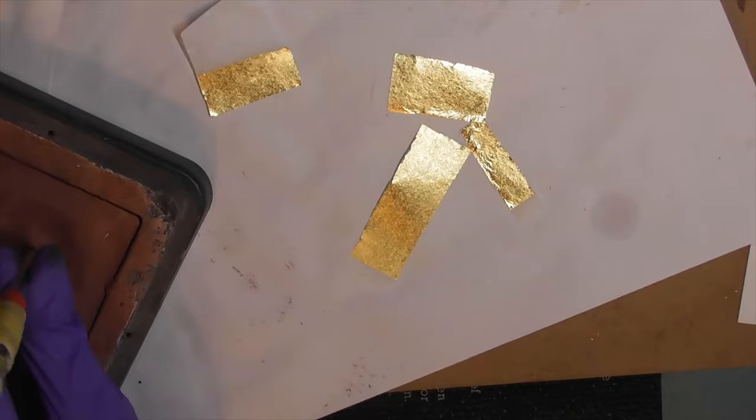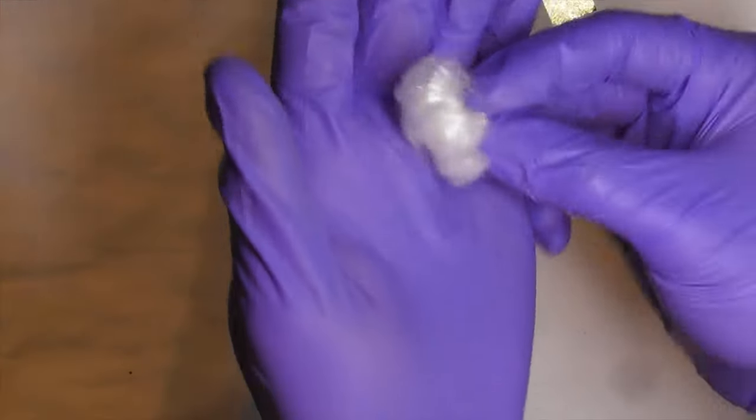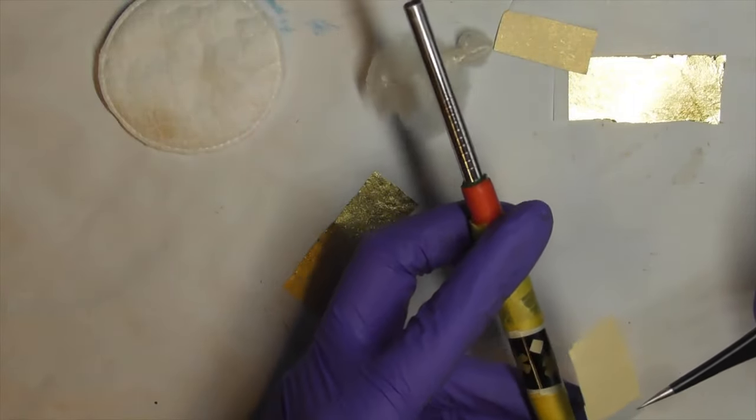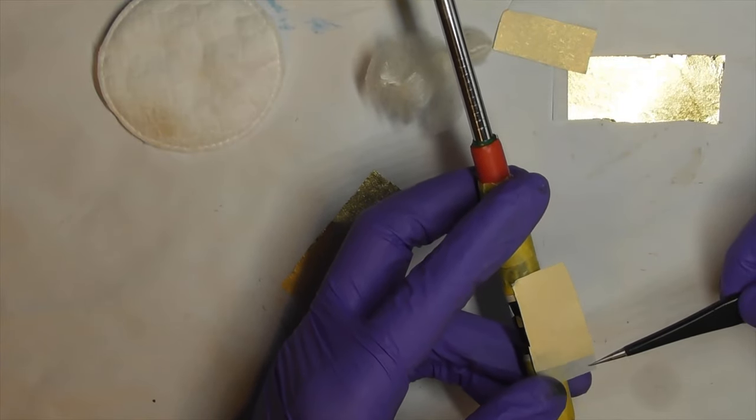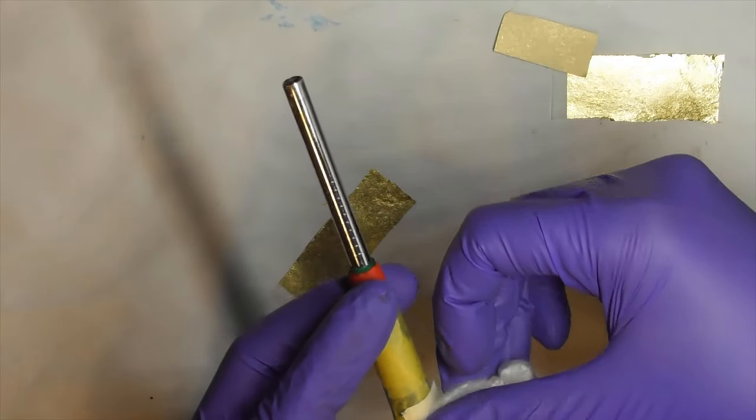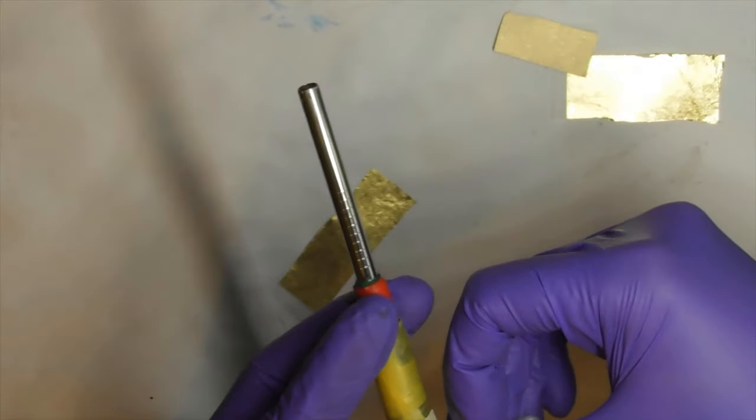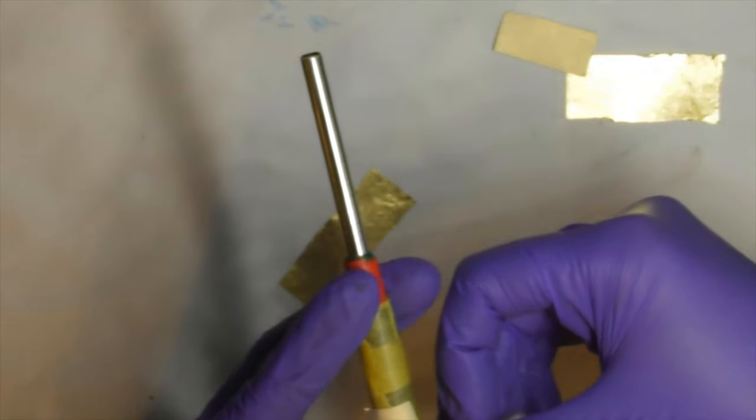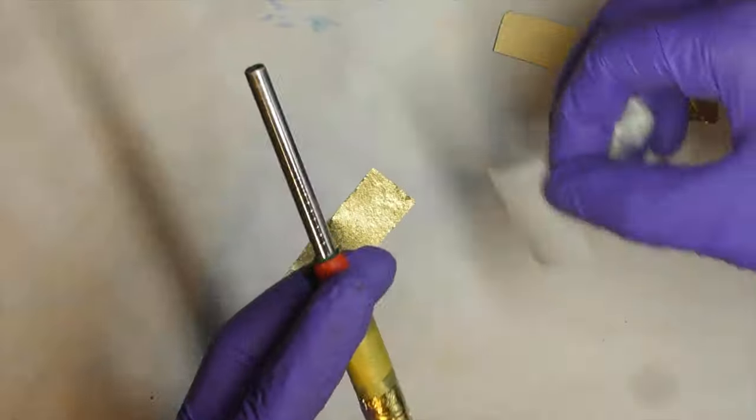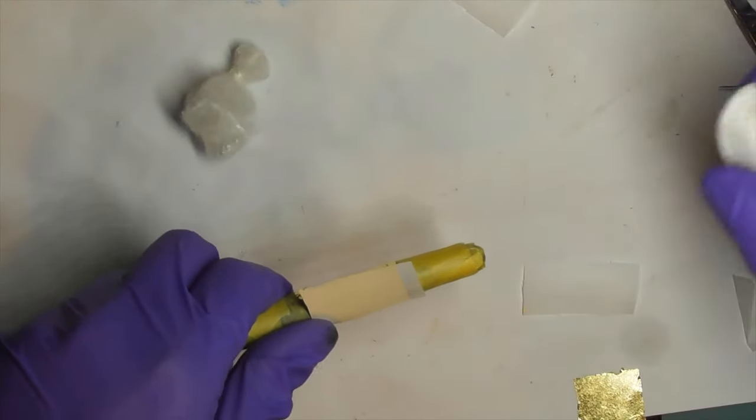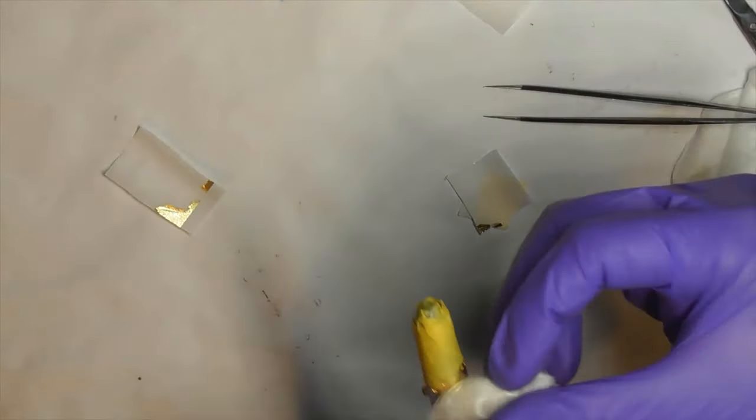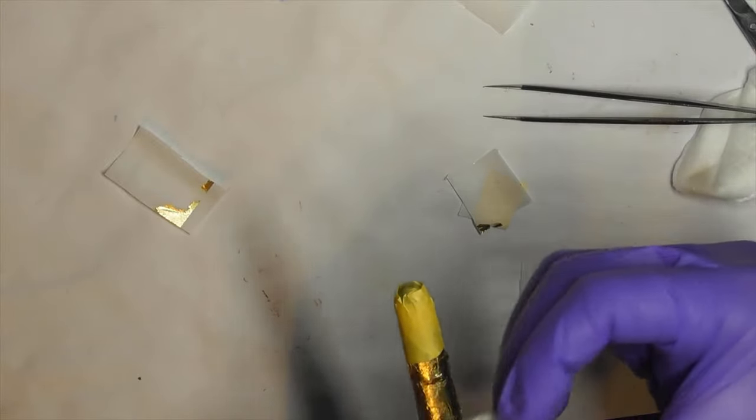Step 10: Gild the gold leaf onto the pen using silk wool and tweezer. I love the texture of silk. Hold the corner of the sheet onto the pen, and lightly press the back of the sheet with the silk wool to release the gold leaf. Then lightly tap the pen with the silk wool to smoothen the gold leaf.